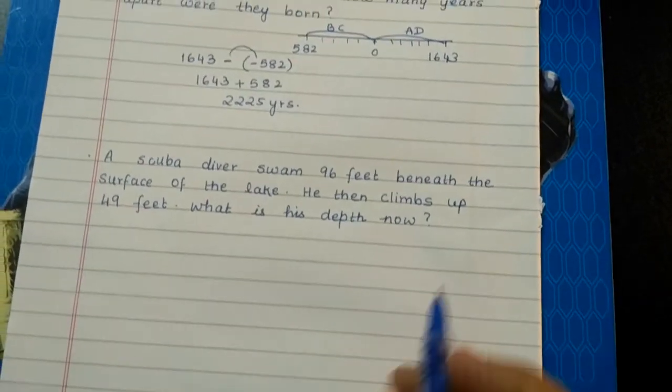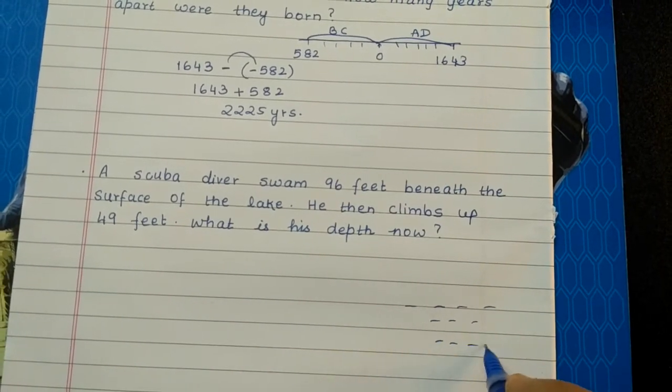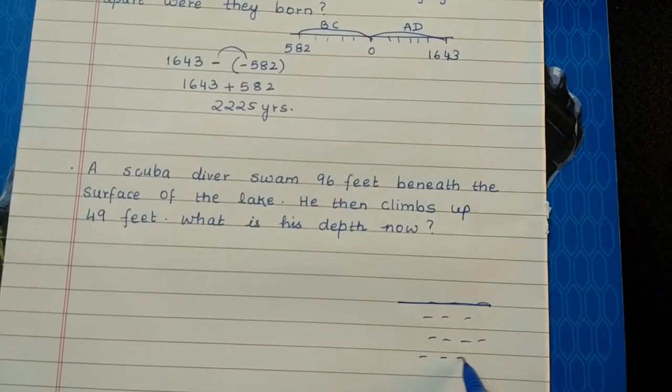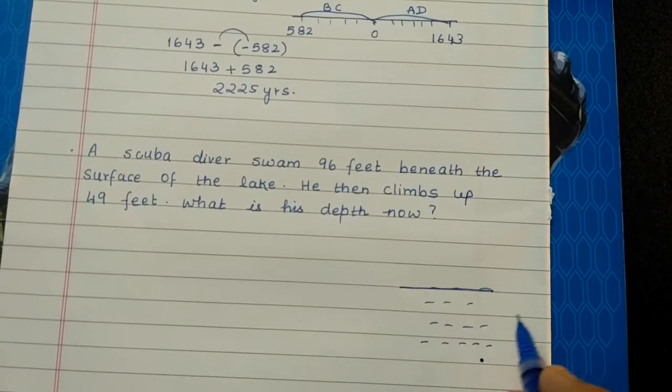Next, a scuba diver swam 96 feet beneath the surface of the water. Suppose this is the ground level and here the water is there. The scuba diver is here, 96 feet below.